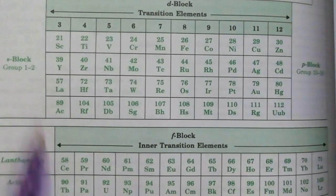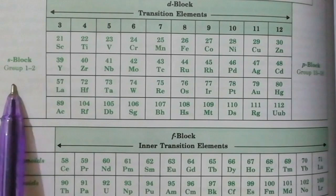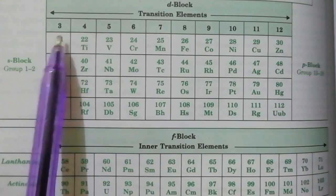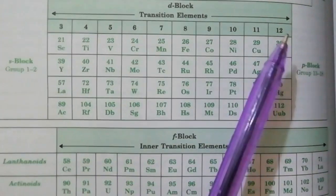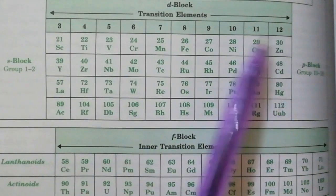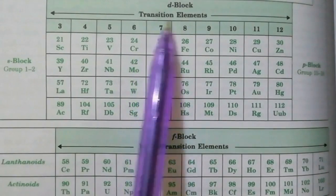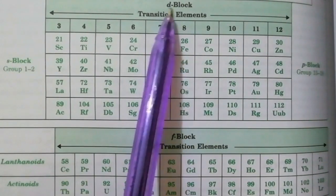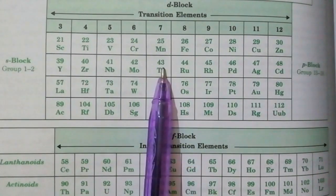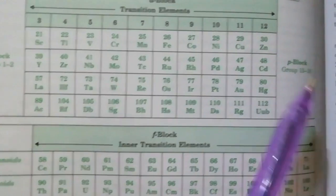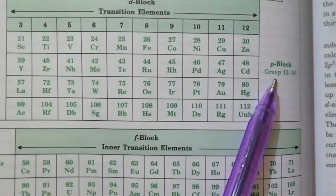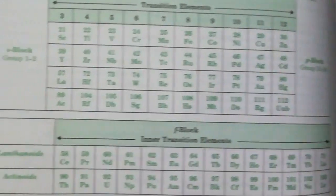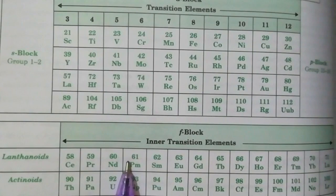Looking at the periodic table: groups 1 to 2 is S block, groups 3 to 12 is D block or transition elements, and the end portion from 13 to 18 is P block — as already discussed.